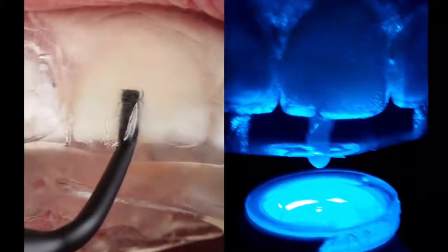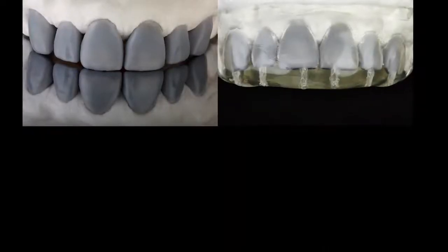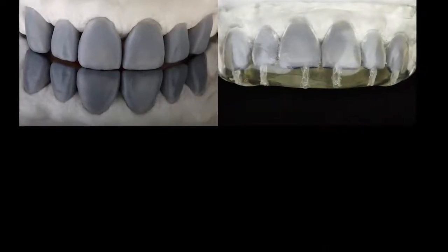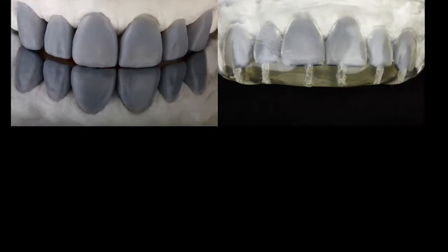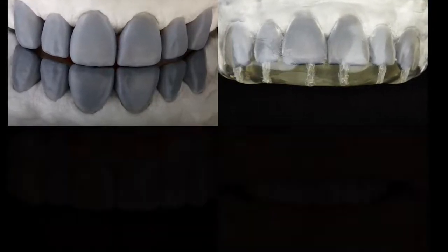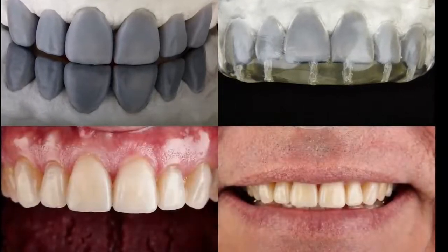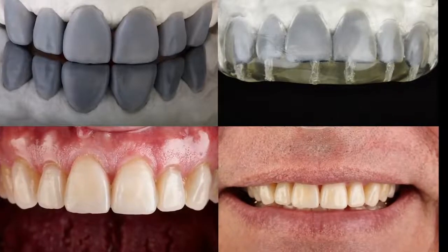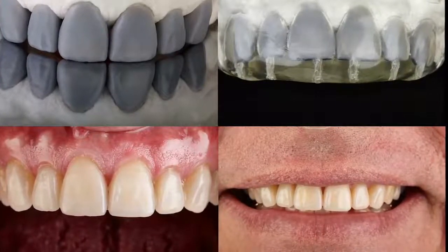This clear vinyl polysiloxane material, Exaclear by GC, allows you to visualize the injection process with a flowable material such as G-ænial Universal Flo. You can eliminate any voids by compressing the matrix from the facial or buccal and lingual, and you can see the orientation of colors of the flowable before light curing.